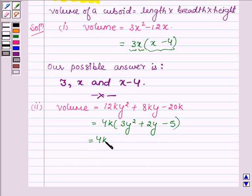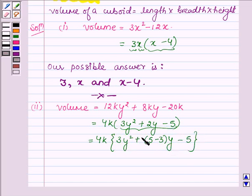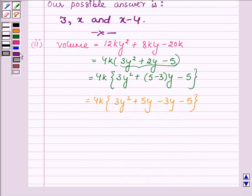So we have 4k, and this by splitting the middle term can be written as 3y² + 5y - 3y - 5, which is further equal to 4k times this expression.